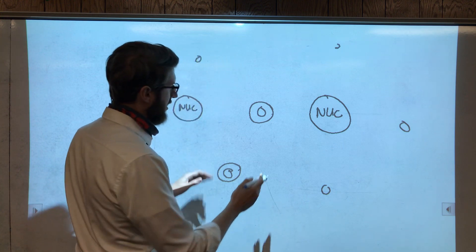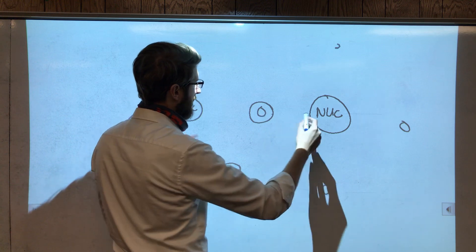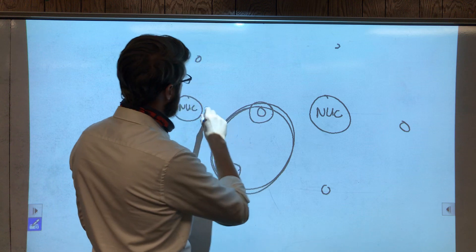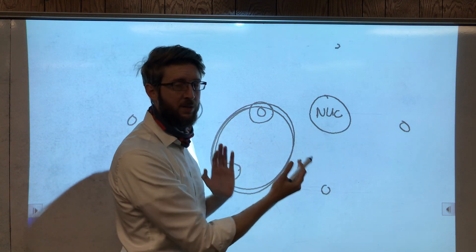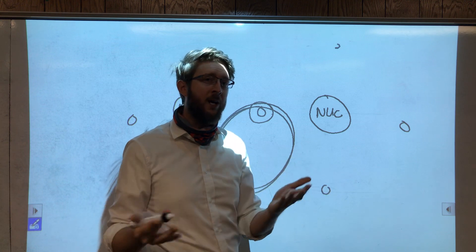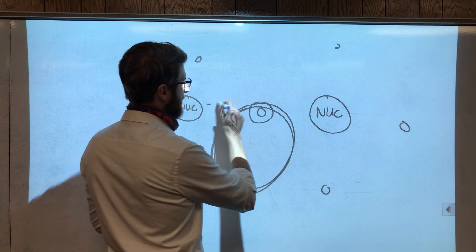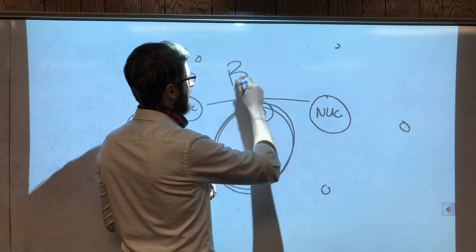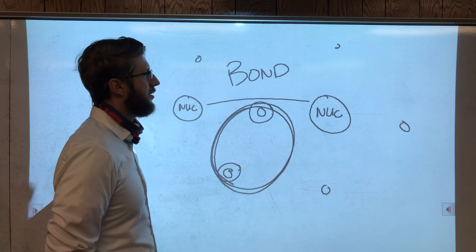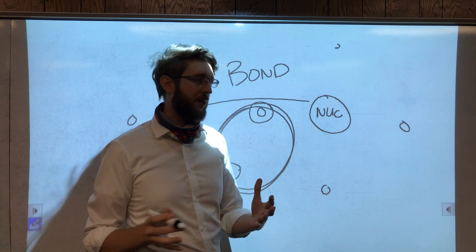So let's say this atom needs one more electron and this atom needs one more electron. What they can do is share electrons. This atom shares its electron with that atom, and that atom shares its electron with this one. What ends up happening is that the electron fields kind of overlap. Once they share electrons with each other so that they can have the right number each one needs, they create what we call a bond.